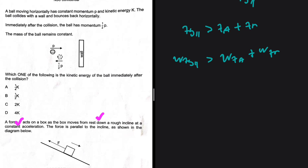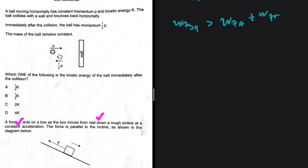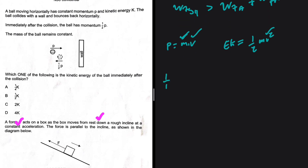Question 1.3: a ball with momentum p and kinetic energy k collides with a wall and bounces. Immediately after, the ball has momentum p/2. The mass remains constant, so if momentum is halved, velocity must also be halved: v_final = v/2.